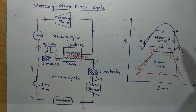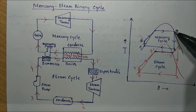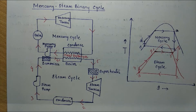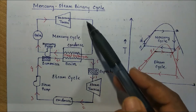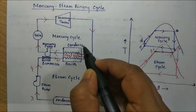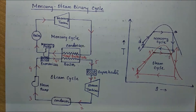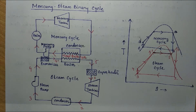This boiler is used to produce mercury vapor, which is fed to the turbine to produce work. The mercury vapor enters the turbine in a saturated state, represented on the T-S diagram as state A. The saturated mercury vapor performs some work and then exits the turbine and enters the condenser, where the condensation process takes place at constant pressure, meaning heat rejection occurs.